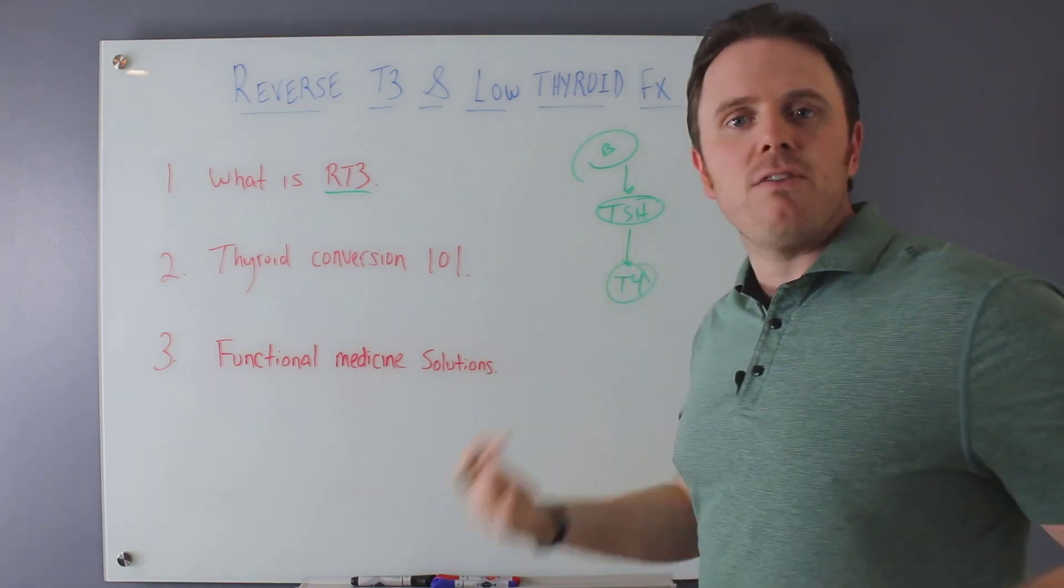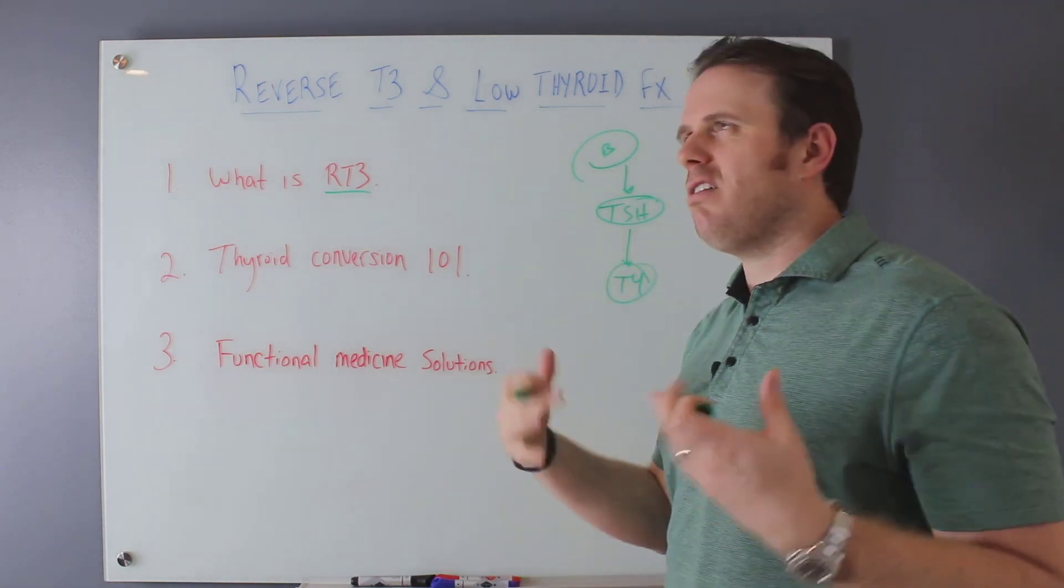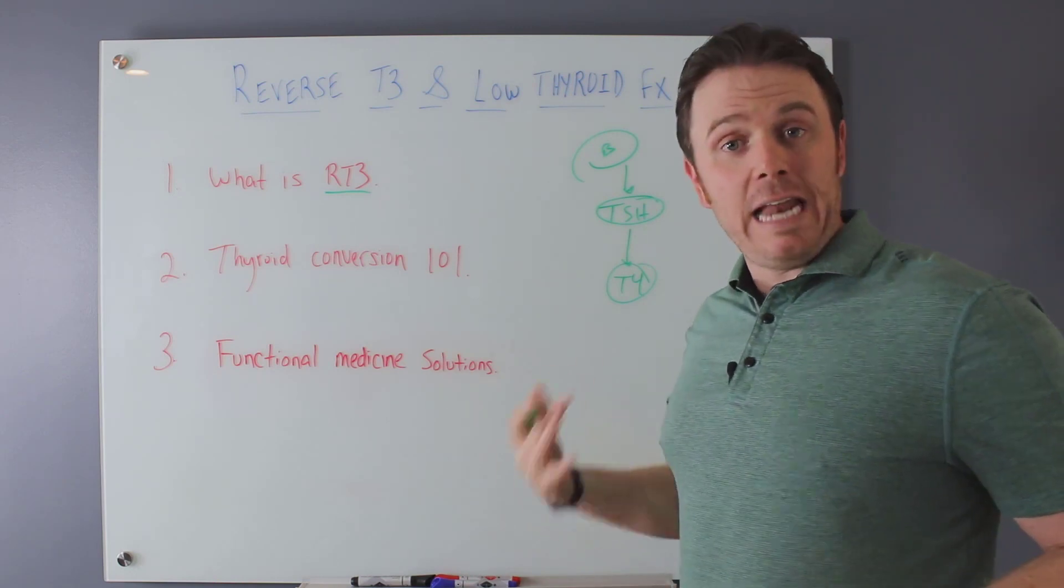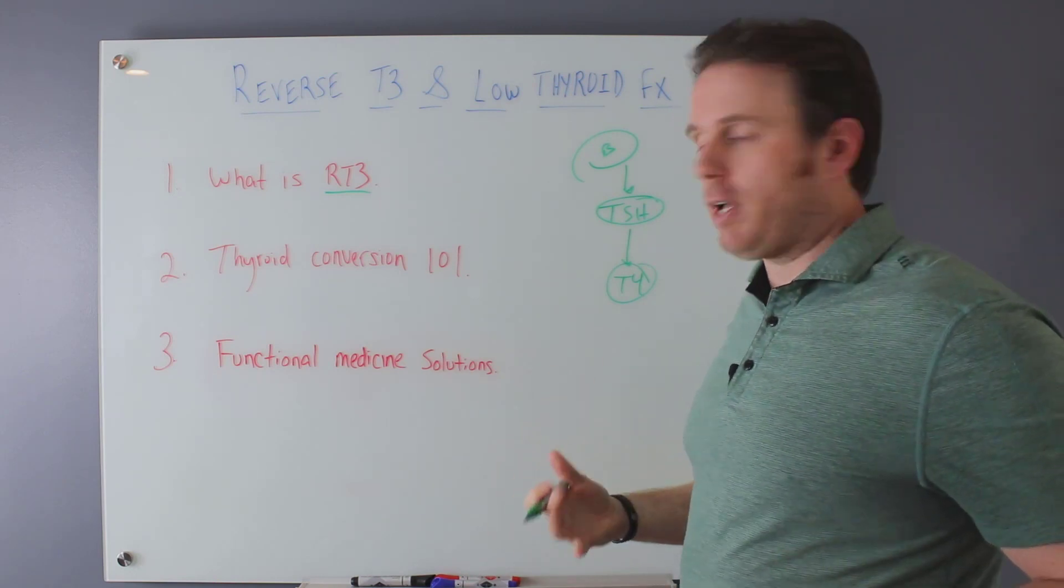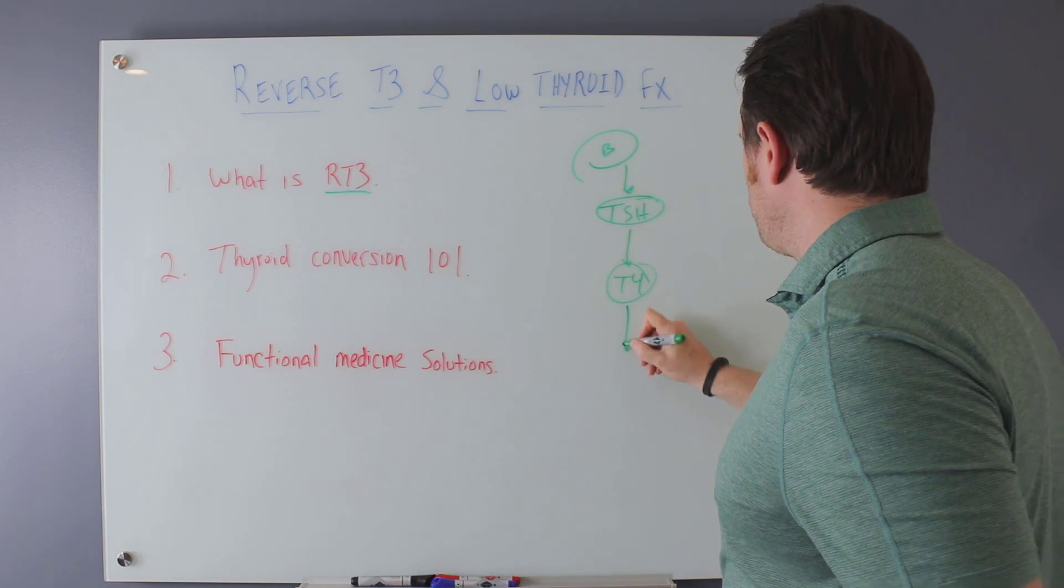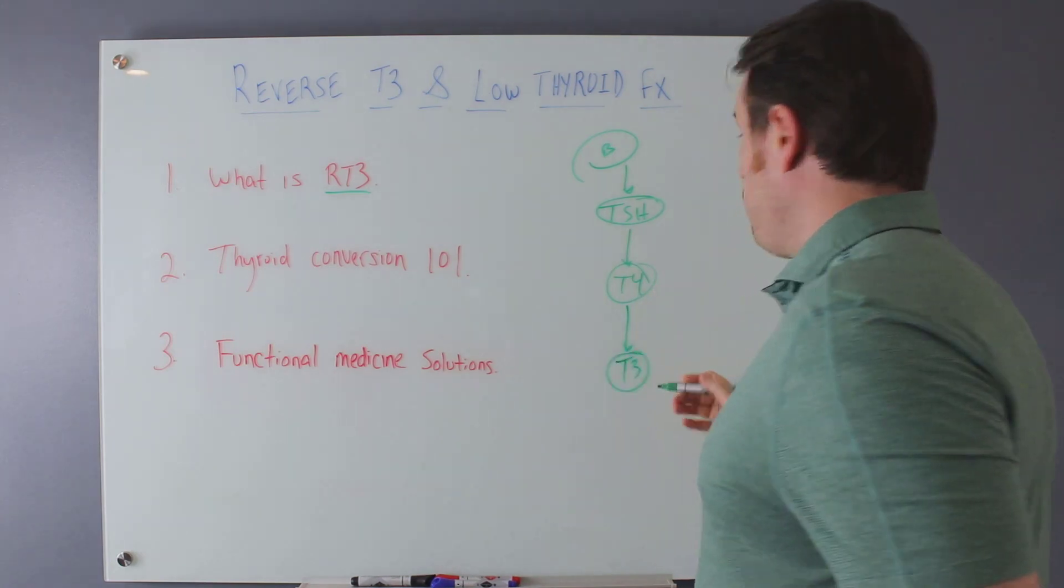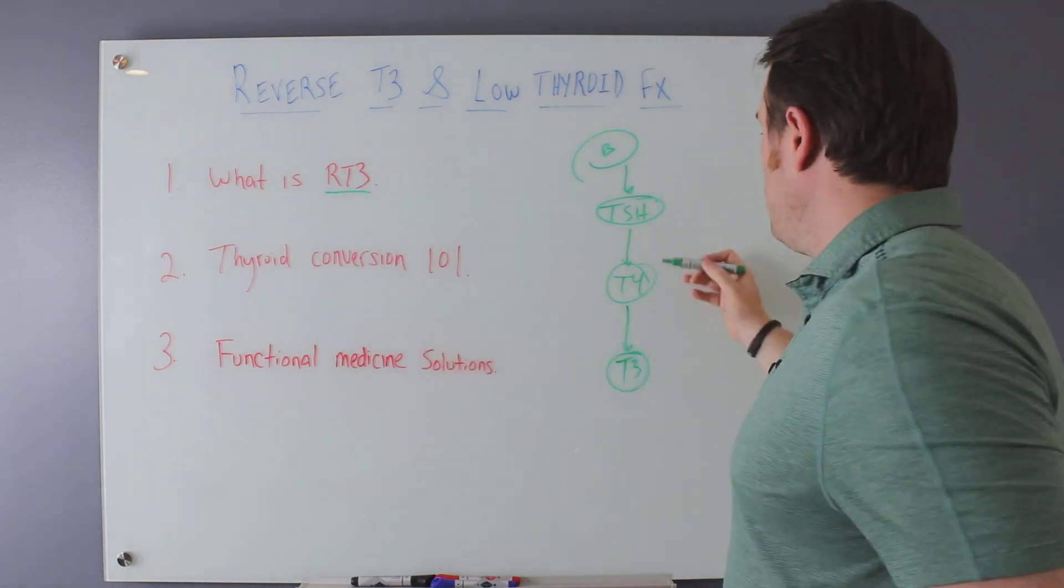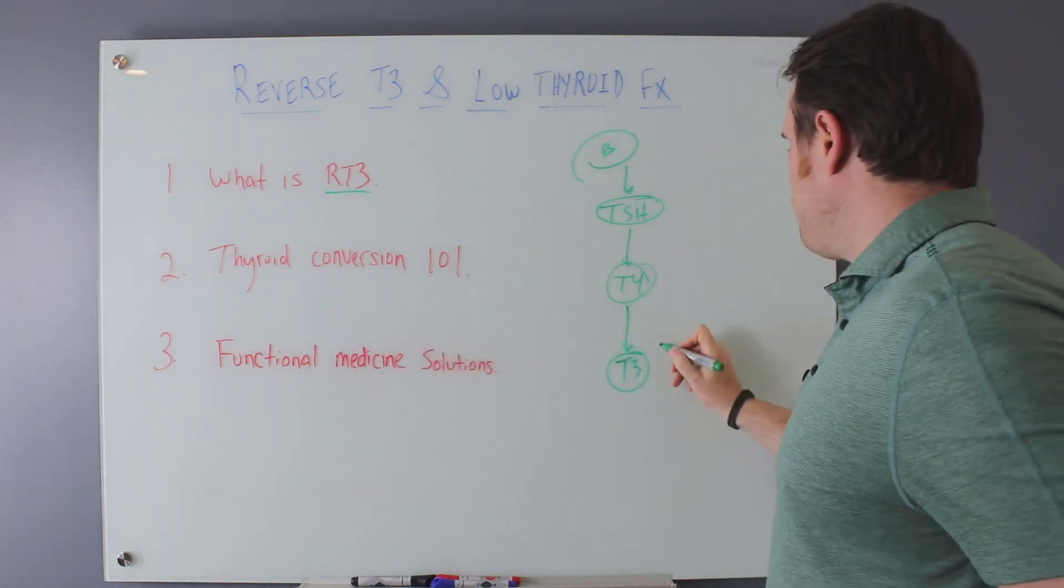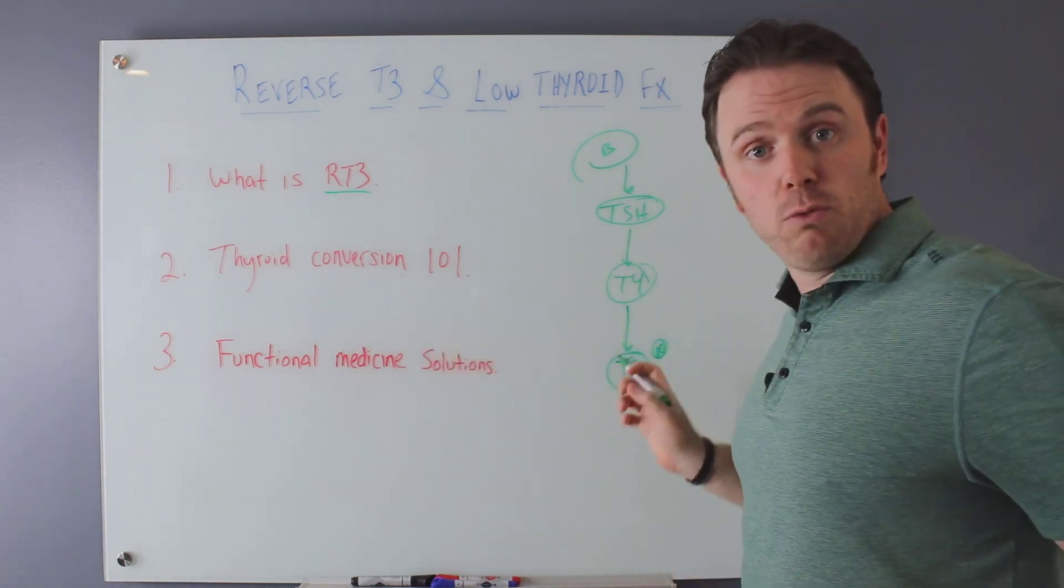T4 is relatively inactive. It's about three to 400% more inactive than T3, okay? And then T4 gets converted to T3, and this is about three to 400% more active than T4. So this is our active metabolic thyroid hormone. This is really, really important.